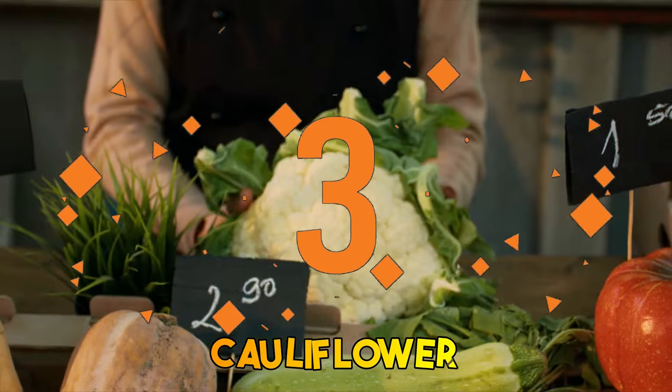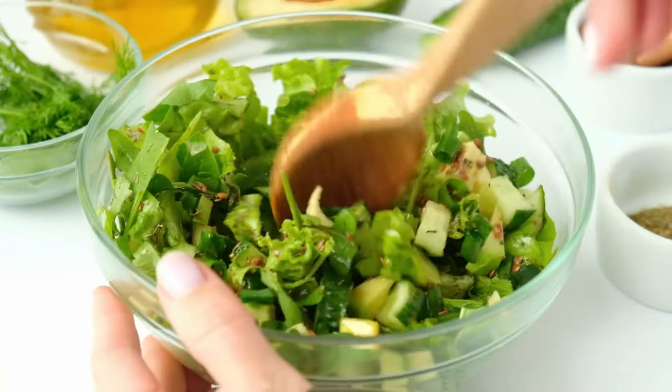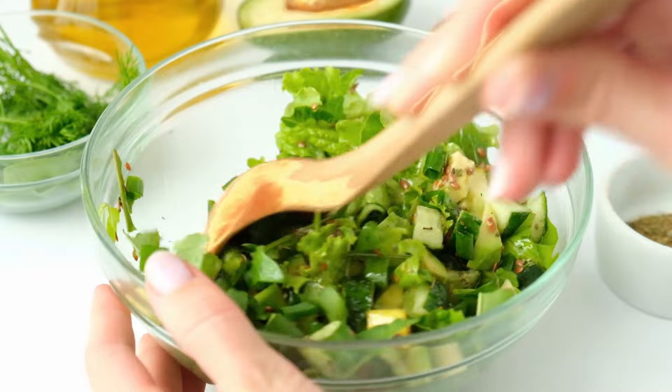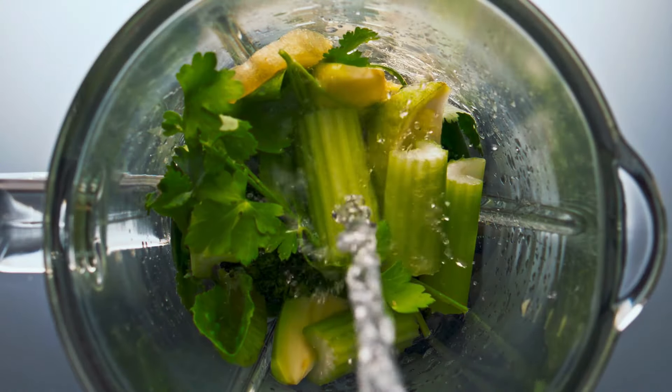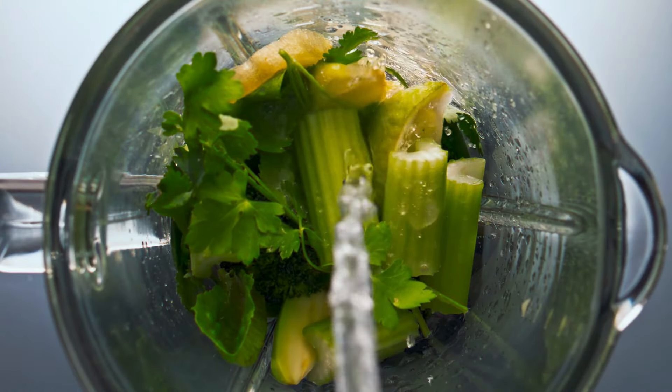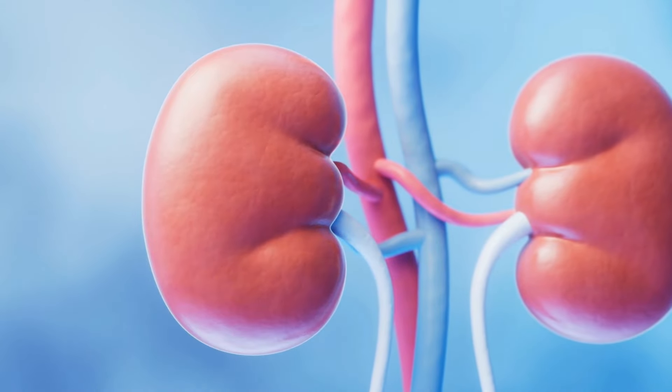Broccoli, cauliflower, brussels sprouts. These cruciferous veggies are packed with sulforaphane, a powerful compound that helps detoxify the body and may even protect against kidney disease.